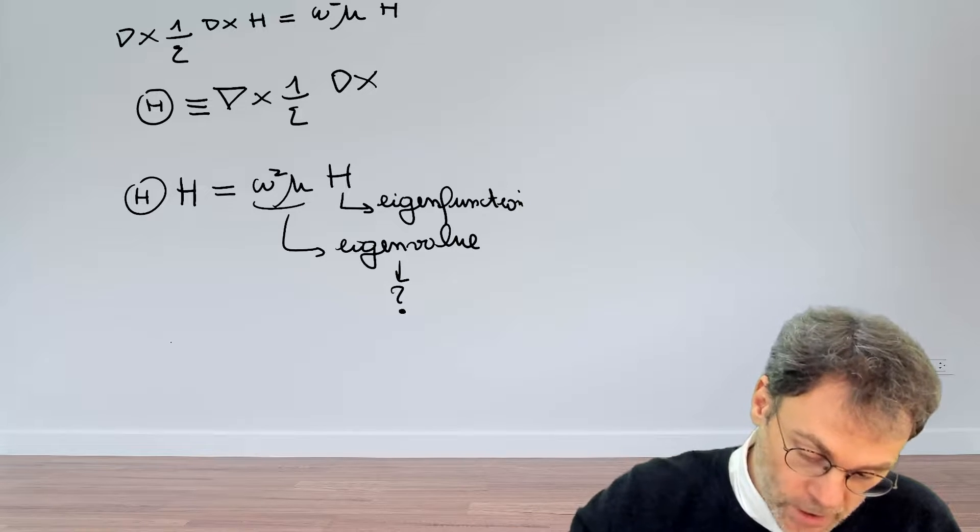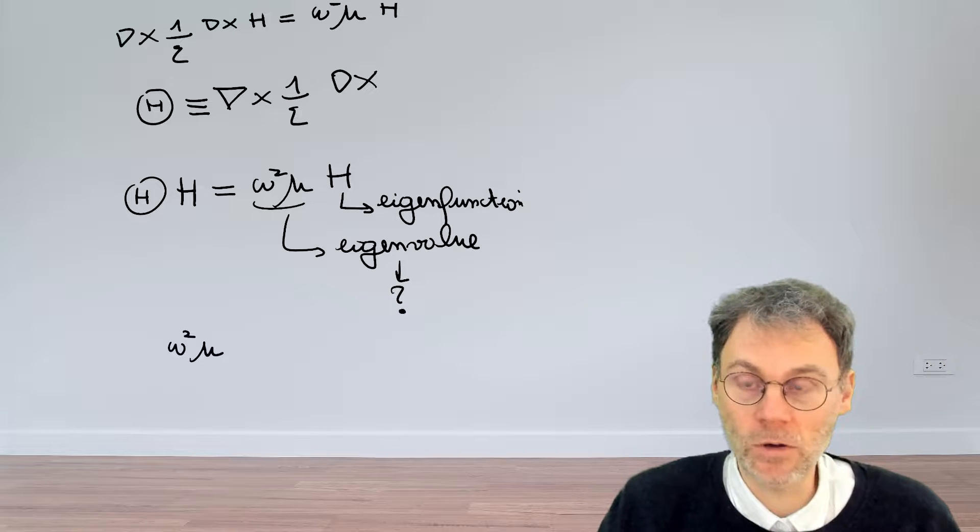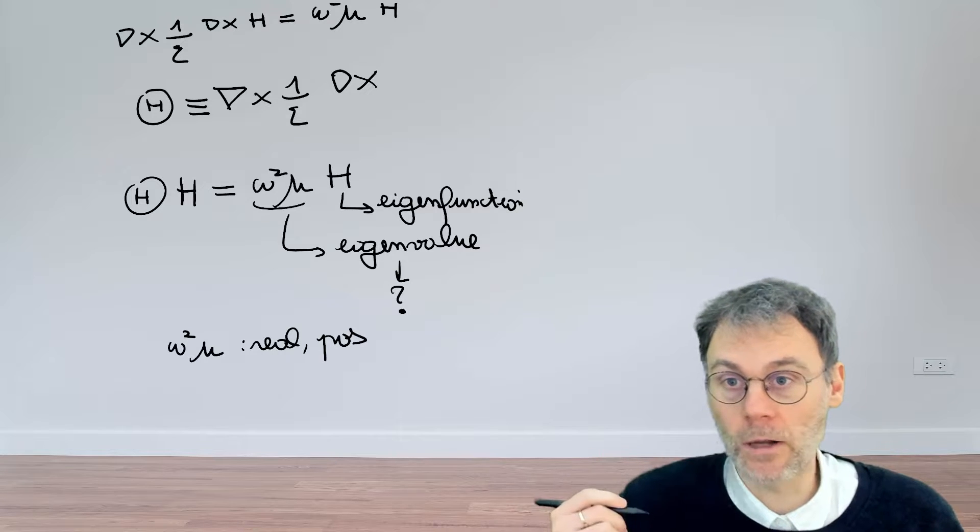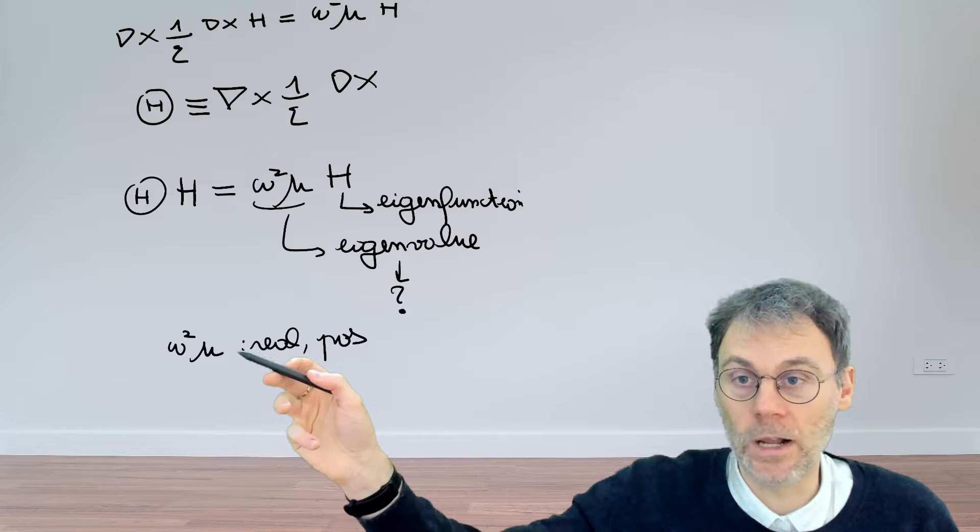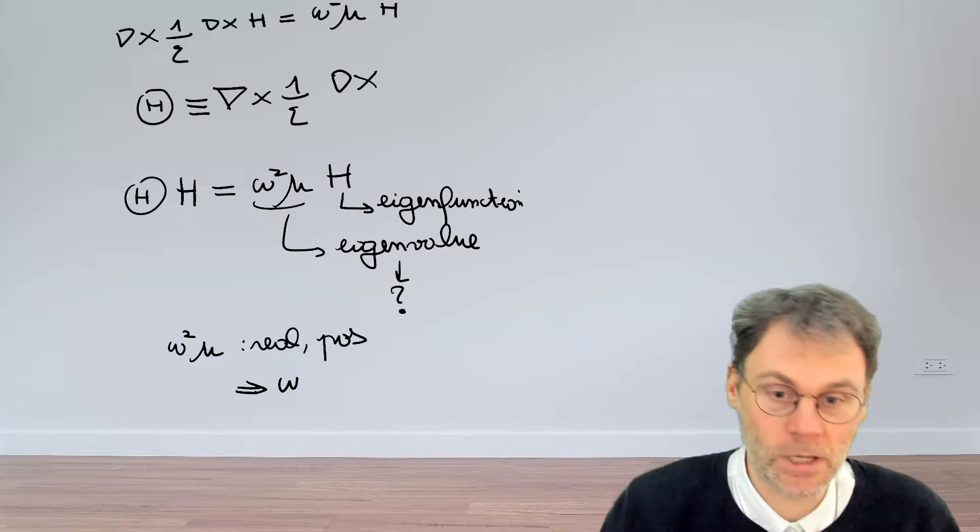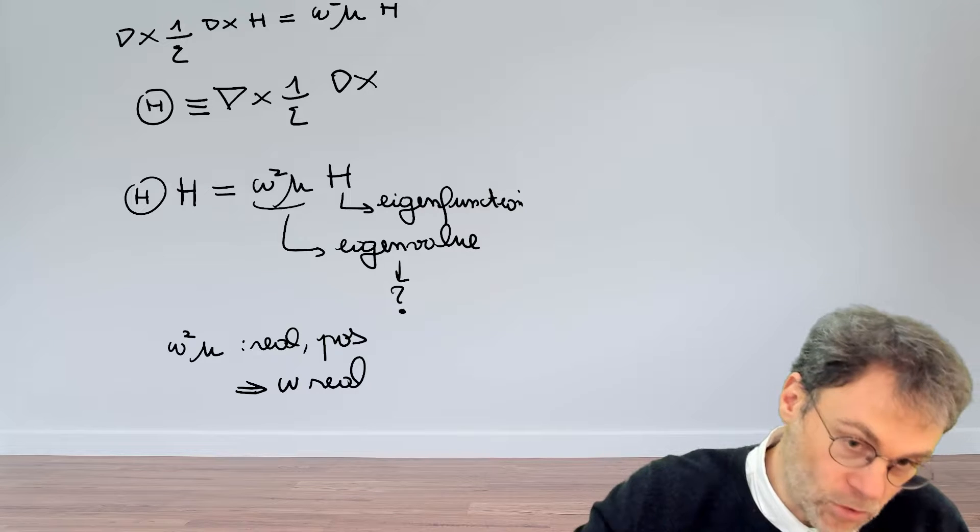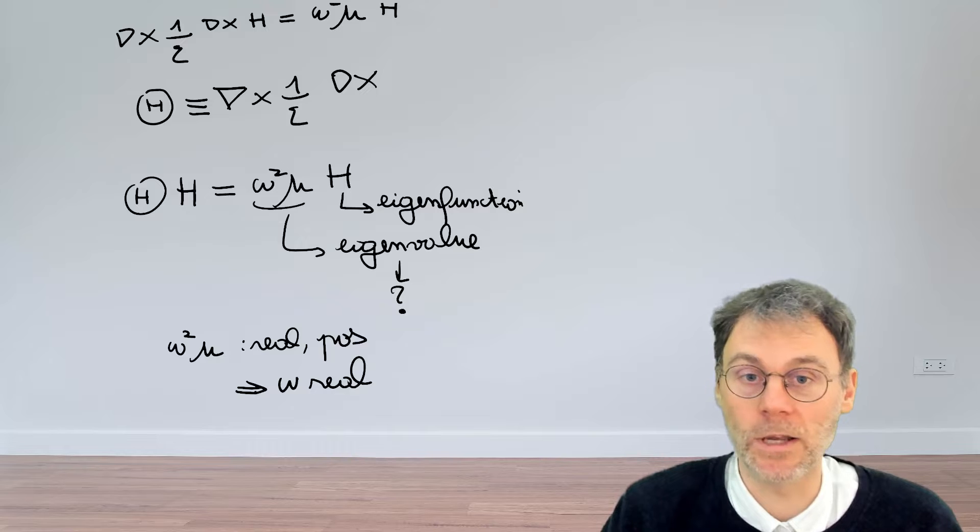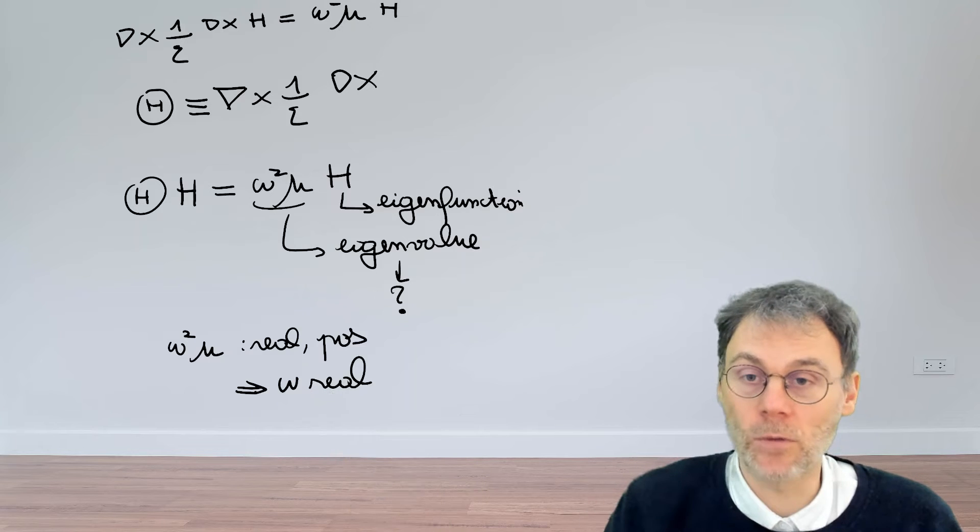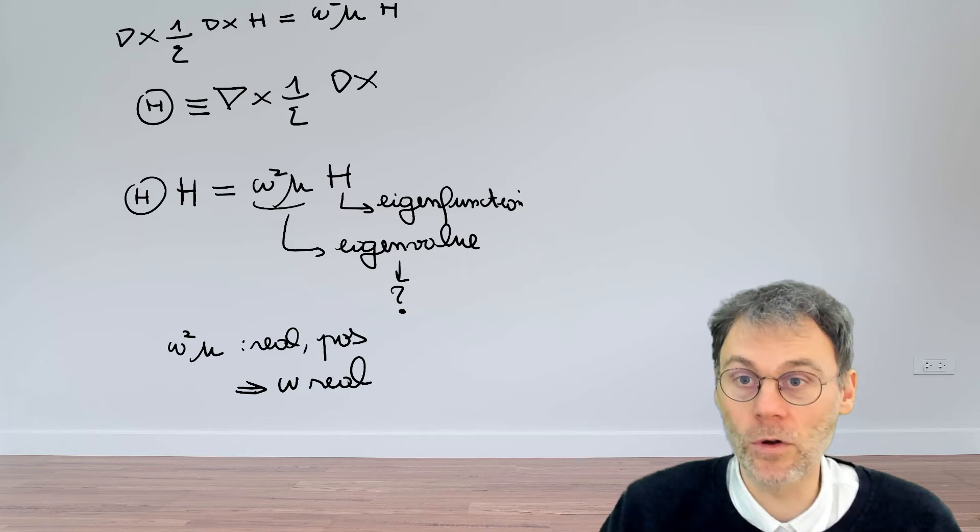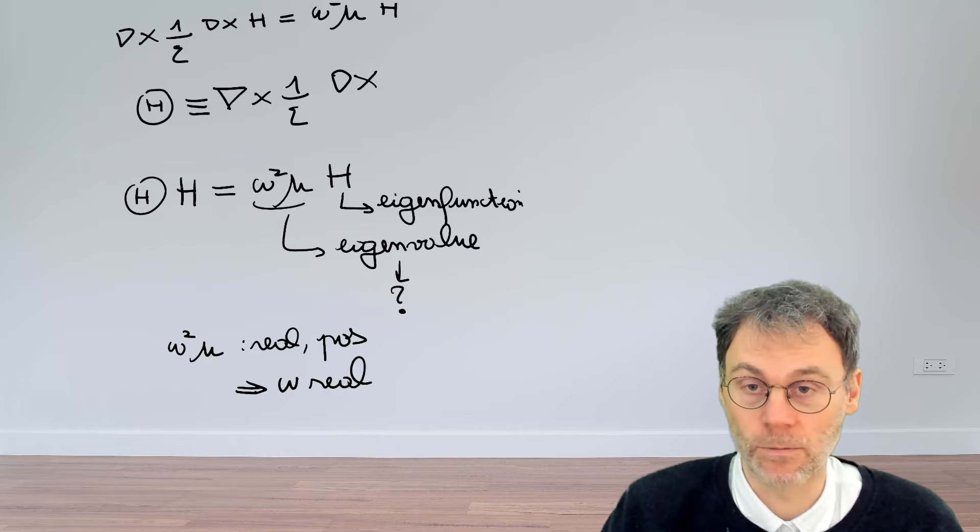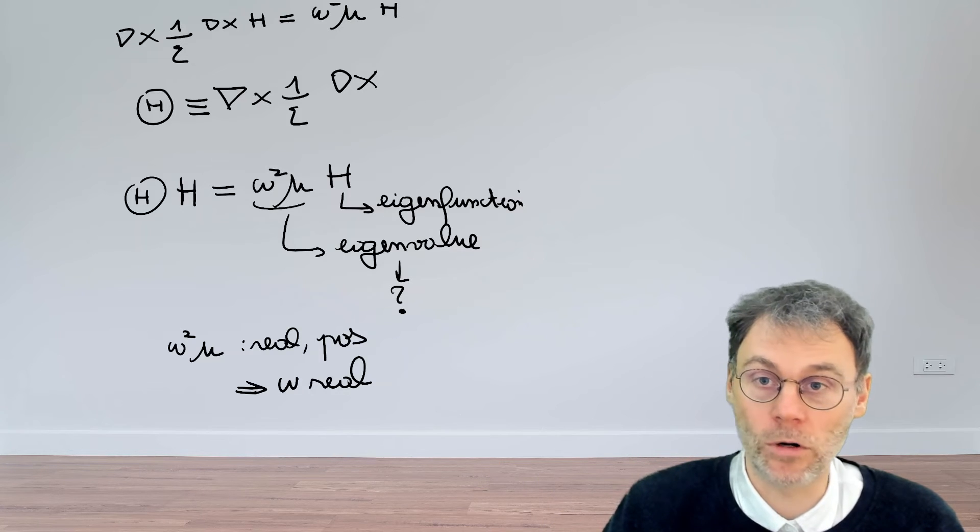Now for physical reasons it would be really great if omega squared mu, the eigenvalue, were real, but not only real, but also positive. Because if we're working with boring non-magnetic materials, mu is then also real and positive, so this would mean that omega squared is real and positive, and this would lead to the very nice property that the resonance frequency omega would be real, which would be nice for physical reasons, because that's basically what we want. So the physical intuition tells us that this thing should be true. The question is can we also prove that from a purely mathematical point of view, that this particular operator has the property that the eigenvalues are real and positive. But that will be our work for the next videos.